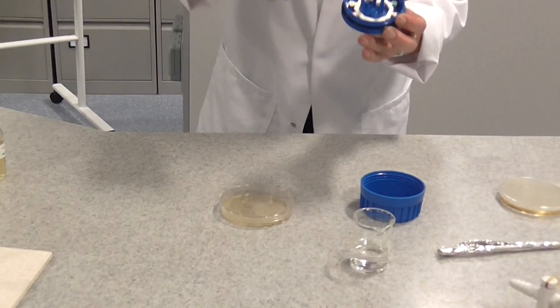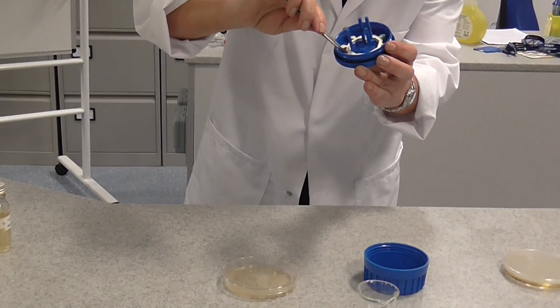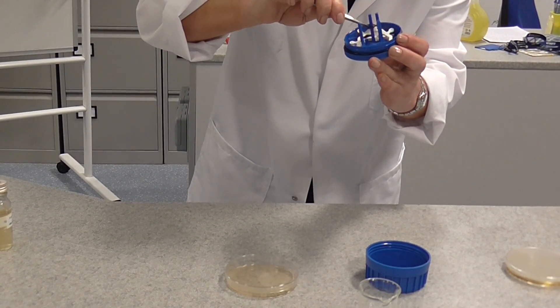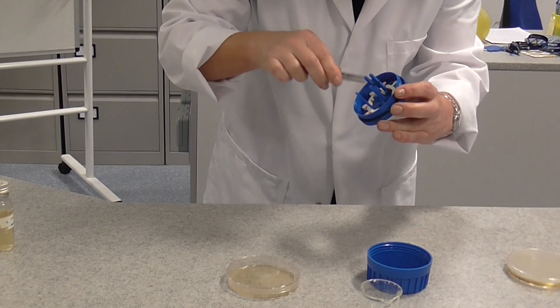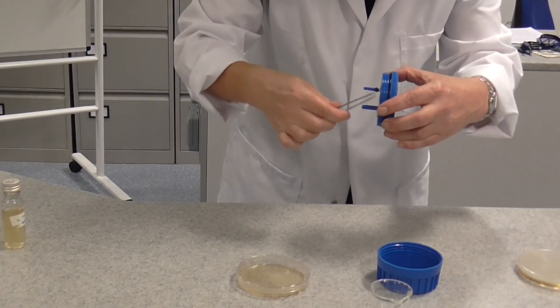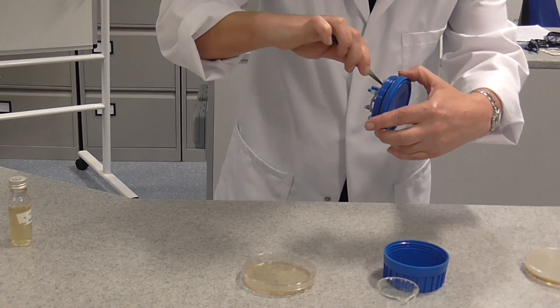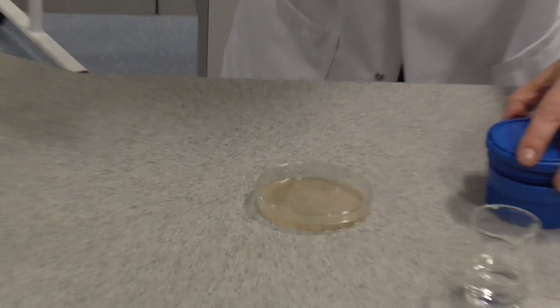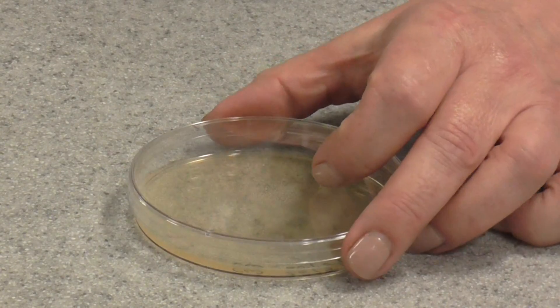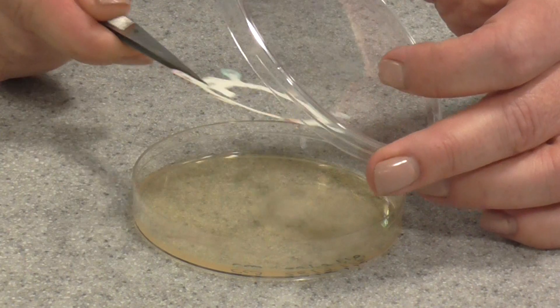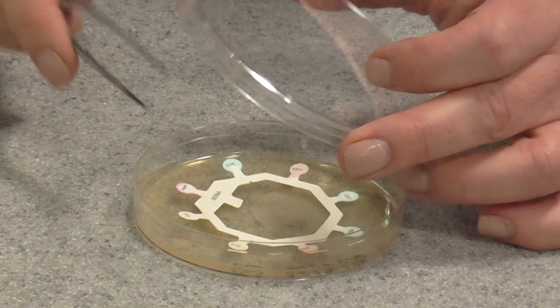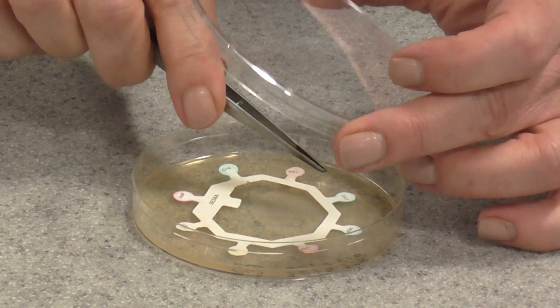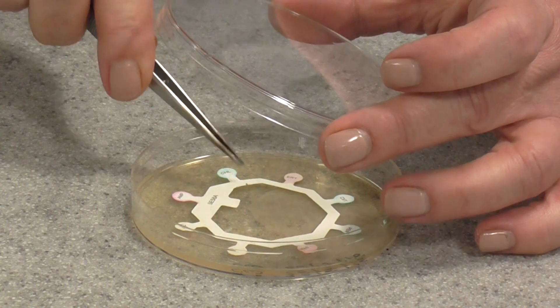I'm now going to carefully, and it's a little bit tricky this because they're well attached, carefully remove one of my antibiotic test discs. And I'm just going to gently open the lid, the Petri dish, and place that on the agar and just gently press it down with the forceps.